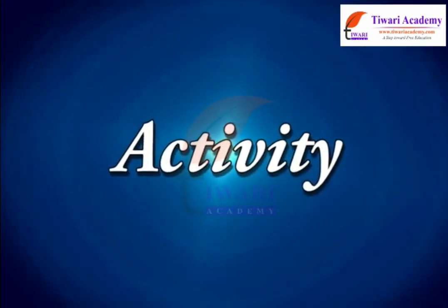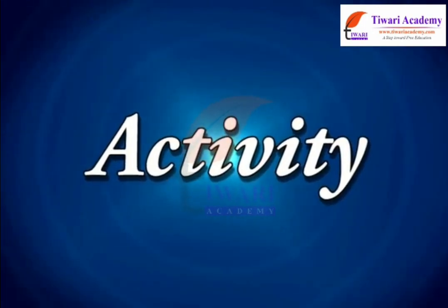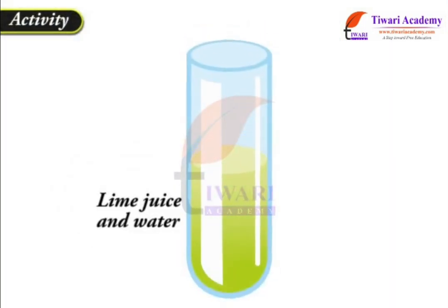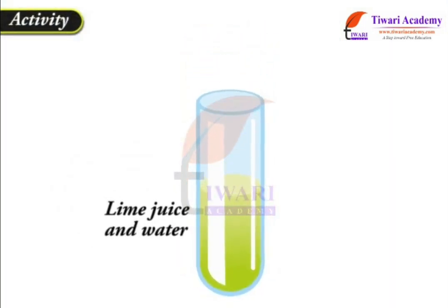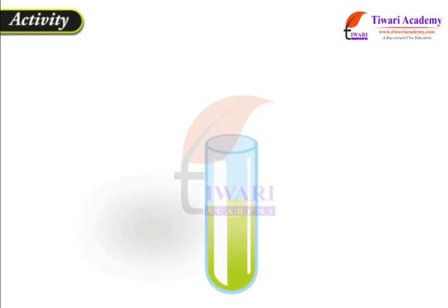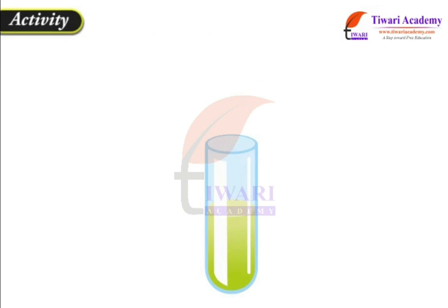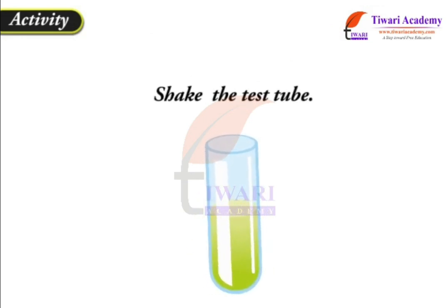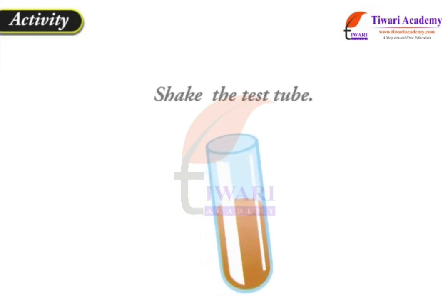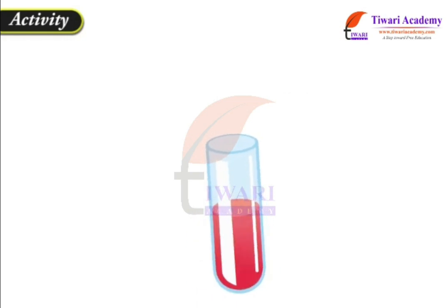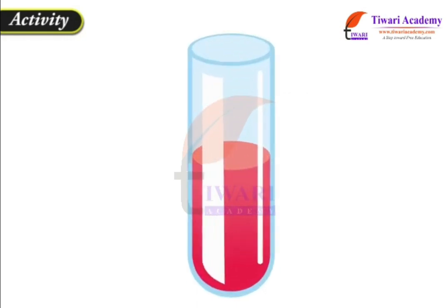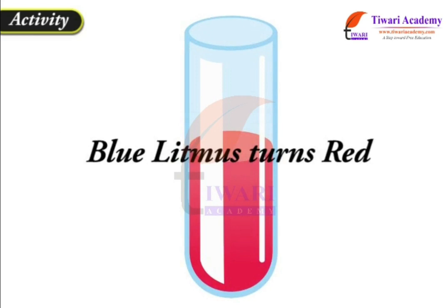Let us understand it with the help of an activity. Take some lime juice in a test tube and mix some water in it. Put a few drops of blue litmus into the solution with the help of a dropper and shake the test tube. Observation: you will find that blue litmus has turned red, indicating the presence of acids in lemon juice.